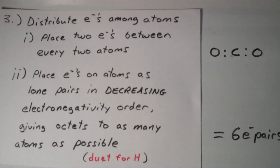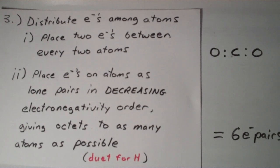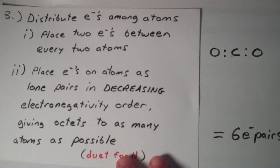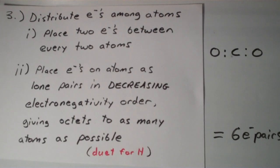And the way that you do this, you stop giving lone pairs to the atom once you achieve an octet for that atom. And in the case of hydrogen, it would be a duet. So you're trying to get octets to as many of these atoms as possible.